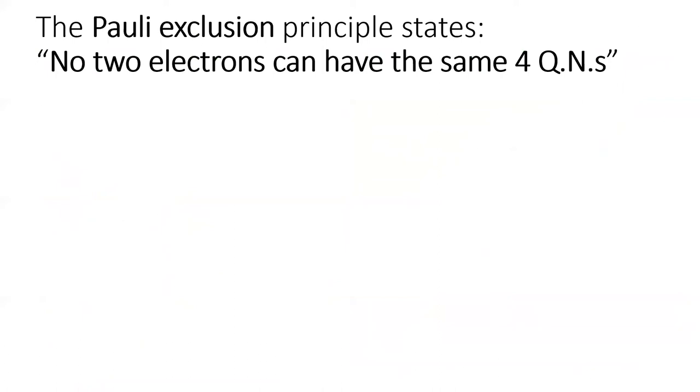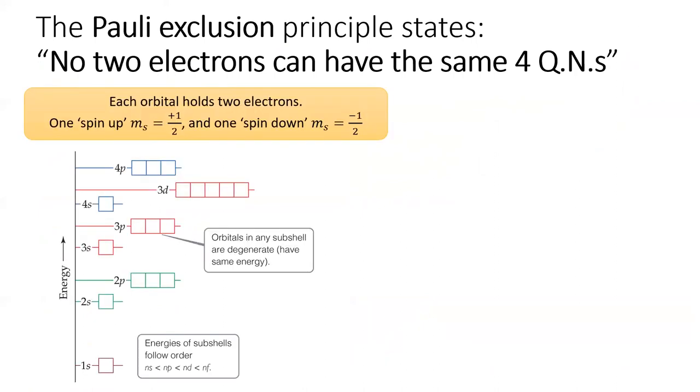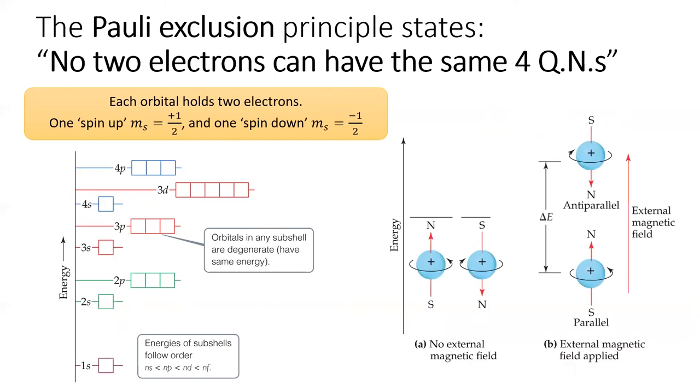Lastly, before we start placing electrons in orbitals, remember that each orbital can fit two electrons, but the Pauli exclusion principle states that no two electrons can have the same four quantum numbers. Each of the two electrons in an orbital has an opposite spin, which is signified by the final quantum number m sub s, the spin quantum number. Electron spin is what causes some materials to be affected by magnets.